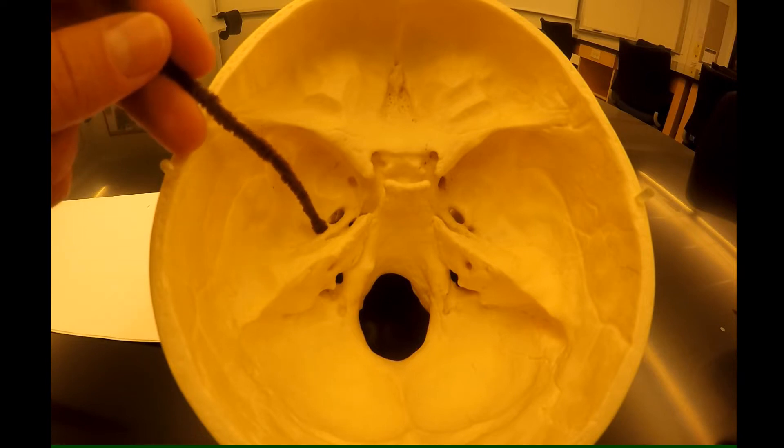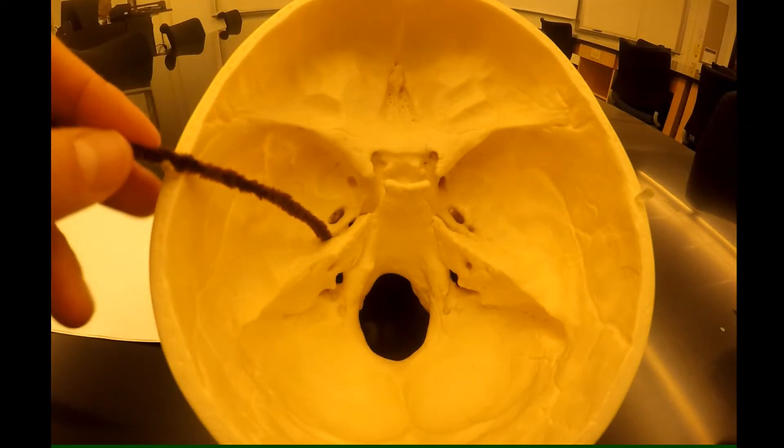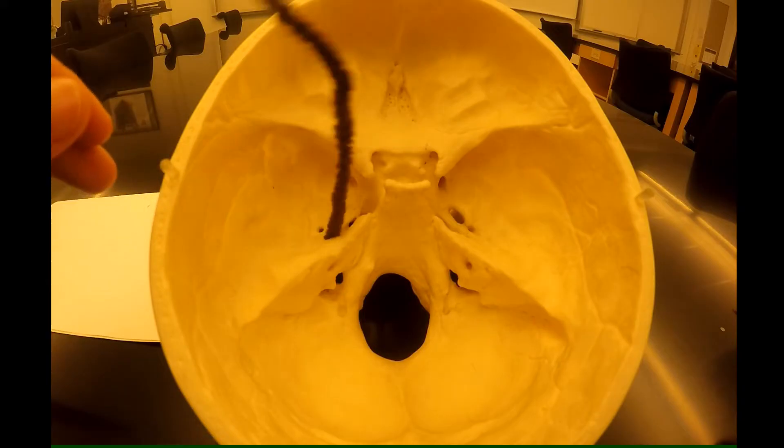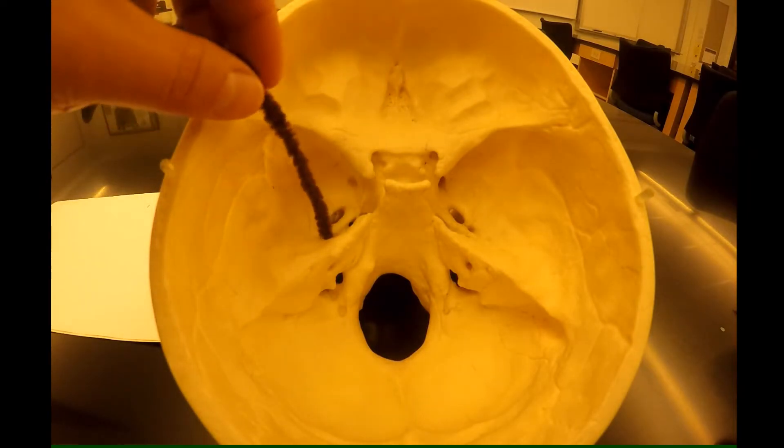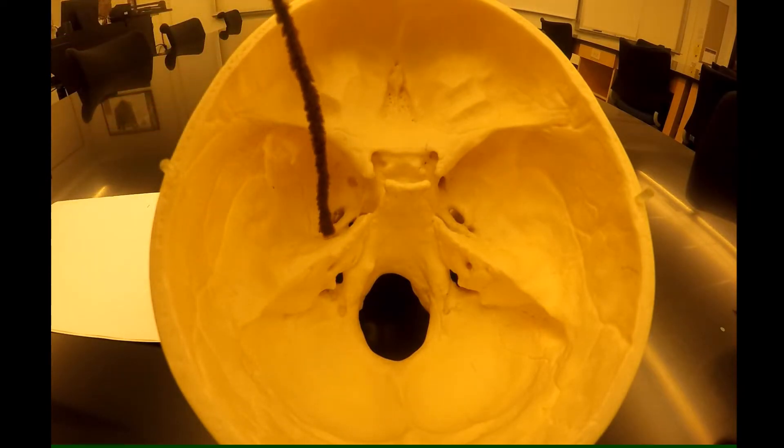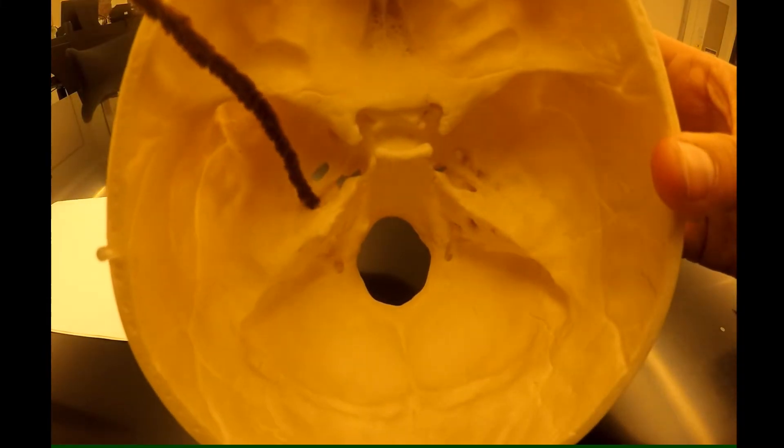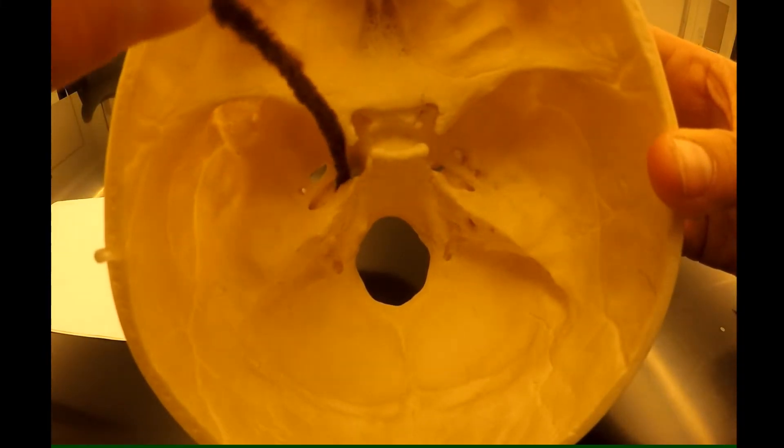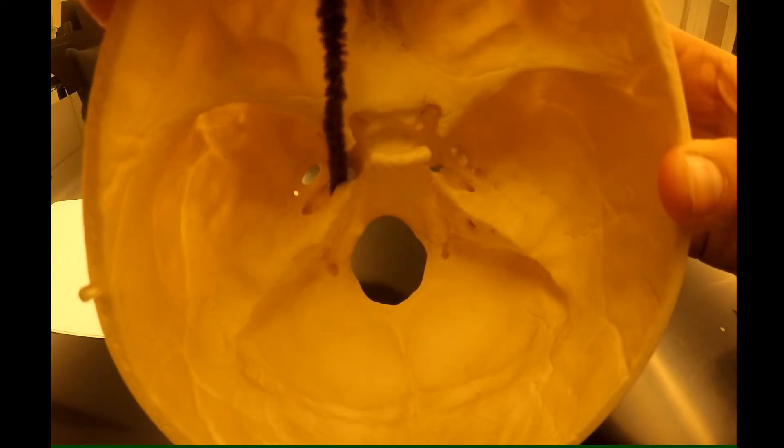From your foramen spinosum, you drop straight back and that's your carotid canal. From your carotid canal, you follow the channel straight up into your foramen lacerum.